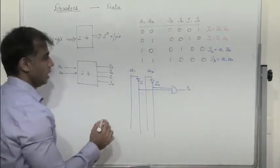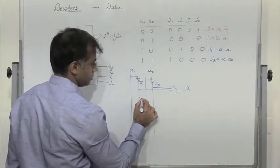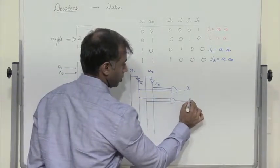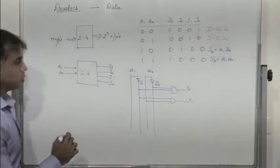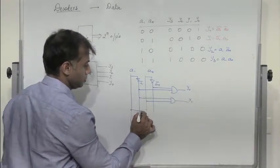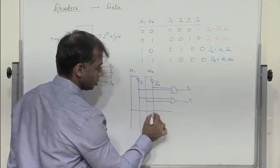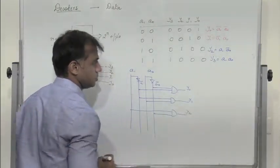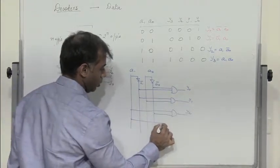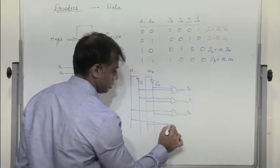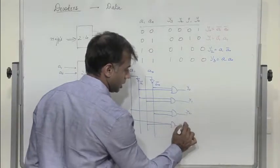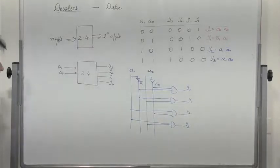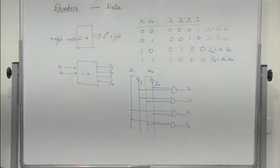Y1 is A1 bar into A0, passed through another AND gate. Y2 is A1 into A0 bar, passed through another AND gate, giving Y2. And then Y3 is A1 into A0, passed through another AND gate, giving Y3. This is how we can design a 2-to-4 decoder. Similarly, we can also design a 3-to-8 decoder and so on.